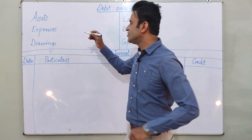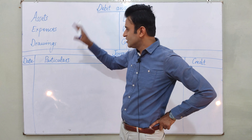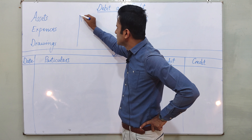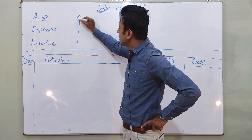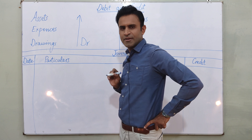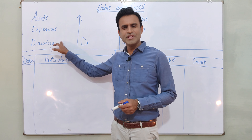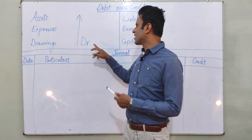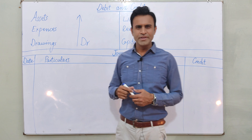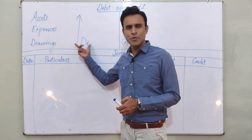These three things — when they increase in a transaction — we will write them in debit. These three things are assets, expenses, and drawings. When they grow, we write them in debit. Debit is spelled D-E-B-I-T. We will assign all of them to debit.